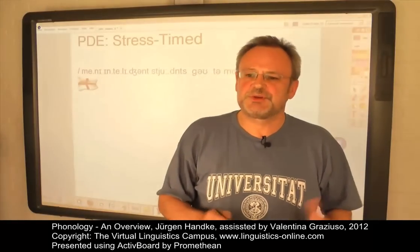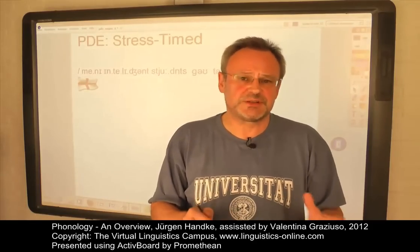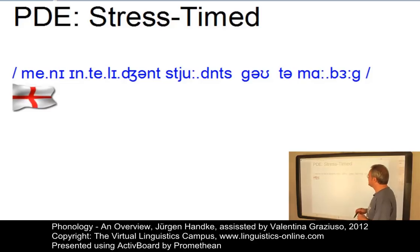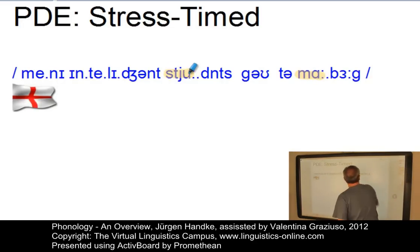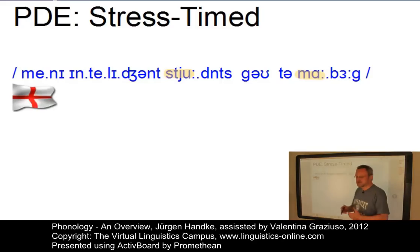From the previous discussion we can conclude that English is stress-timed. Not the syllables within the words are equal in length, but the tone groups — that is, strings that contain one stressed syllable referred to as the nucleus. The syllables themselves may last different amounts of time. In the example 'many intelligent students go to Marburg,' you can clearly hear that the two nuclei — 'stu' and 'Ma' — are longer than all the other syllables in that string.